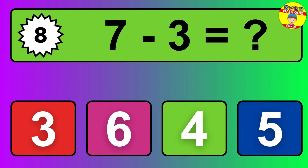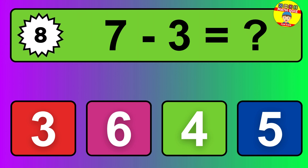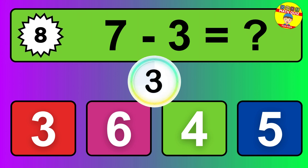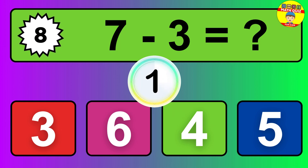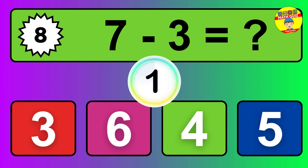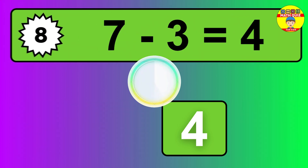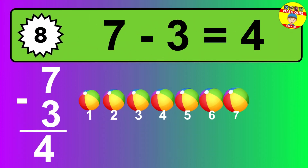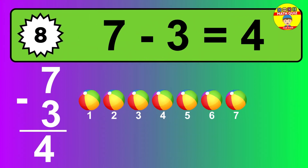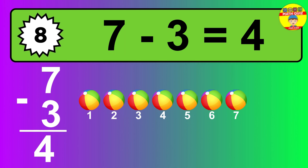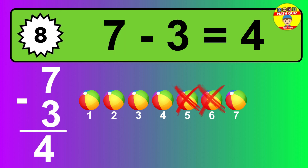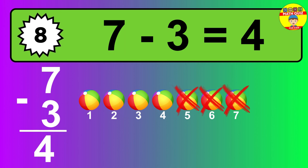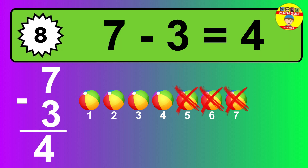Question 8. 7 minus 3 equals what? The answer is 7 minus 3 is 4. Let's count it: 1, 2, 3, 4.